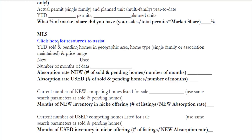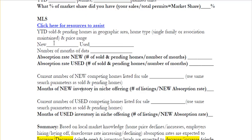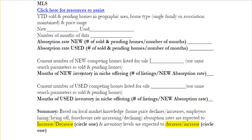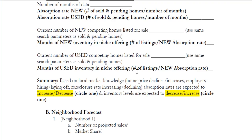Then we're going to figure out our absorption rates. We'll take the number of sold and pending homes divided by the number of months, which will tell us how many homes are absorbing each month. We'll do the same thing for used homes. Now we want to figure out inventory rates for both new and used homes. How many homes are currently listed for sale that are new that you're competing with? How many used homes are currently listed for sale that you're competing with? Remember to stick with the same MLS criteria — the same geographic area, home type, and price range for all of these.